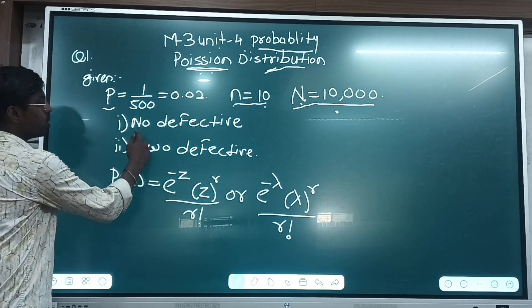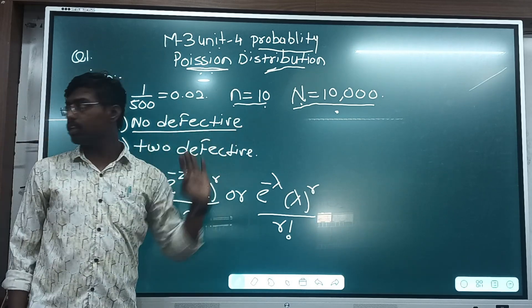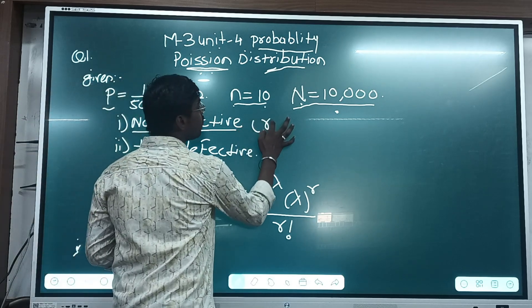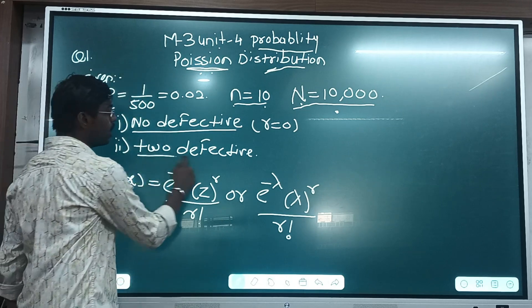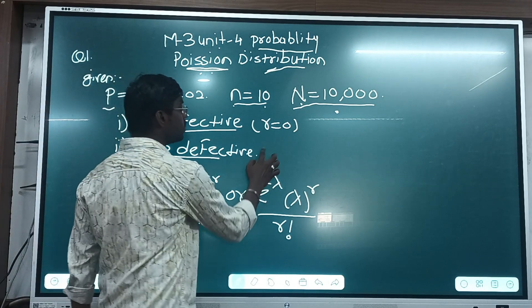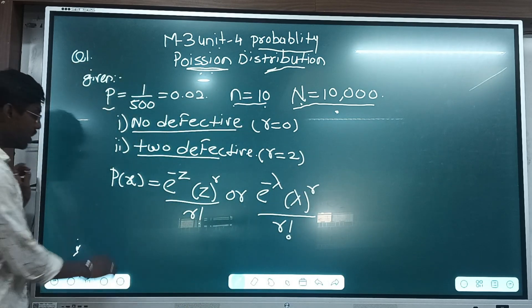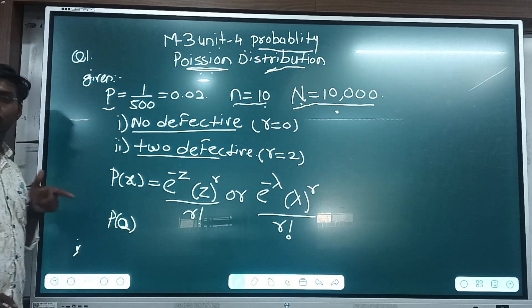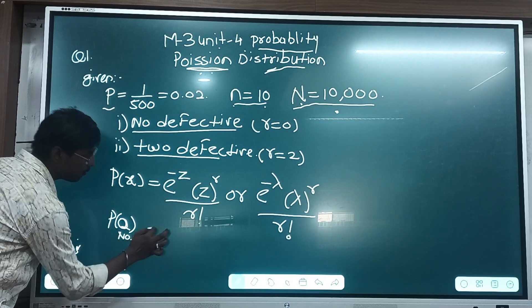In the question, they are asked about no defective. In this out of 10 number, no any defective means the r value is 0, because no defective. And in the second condition, two numbers are defective, that is r is equal to 2. So put in the equation, x for first is 0, that is no defective.